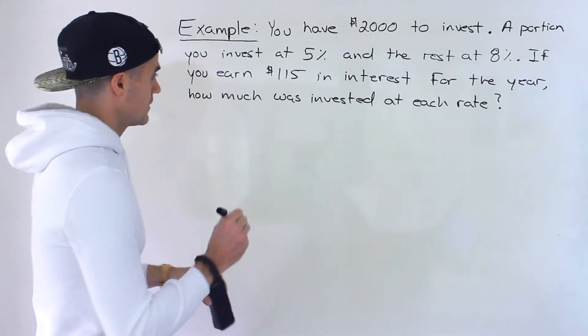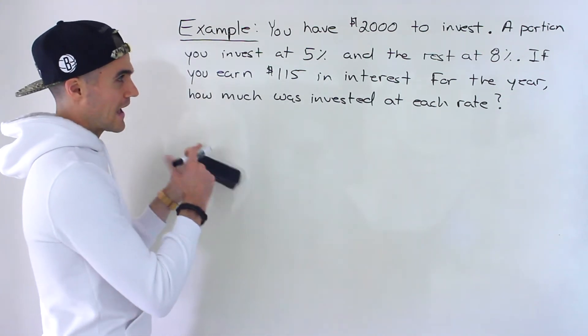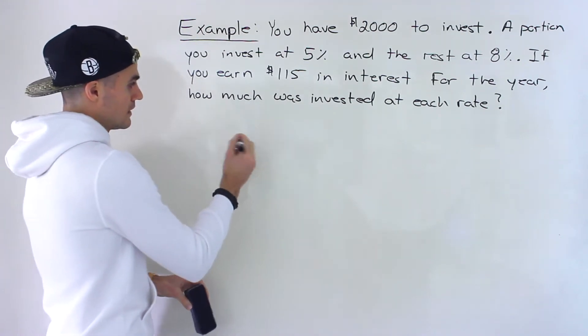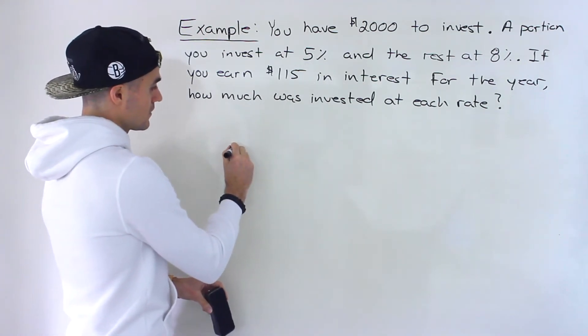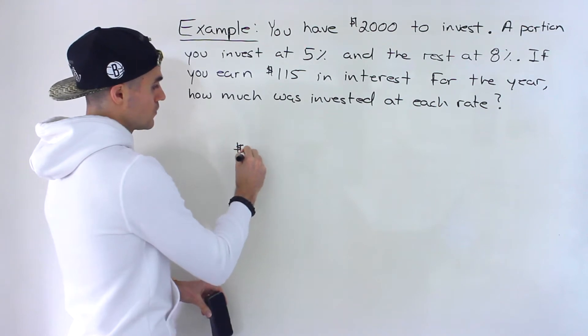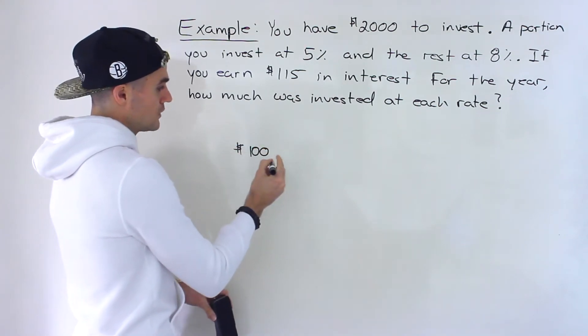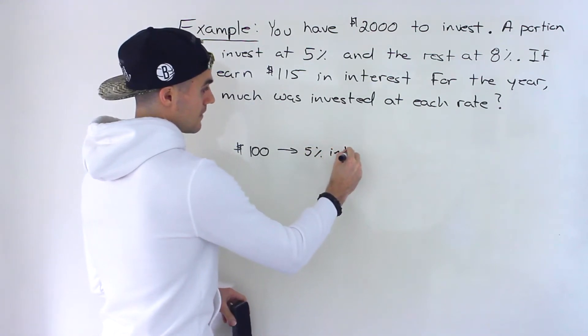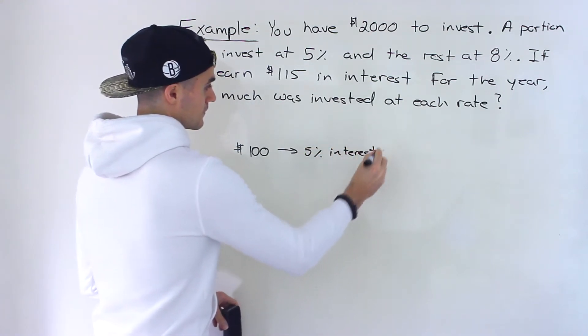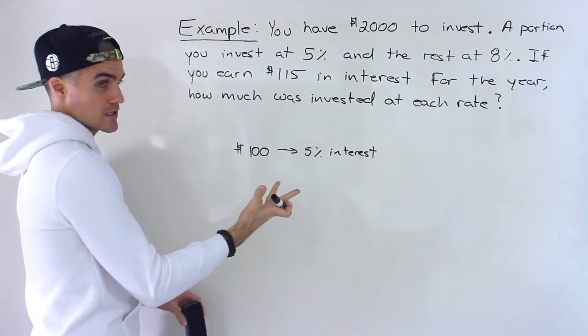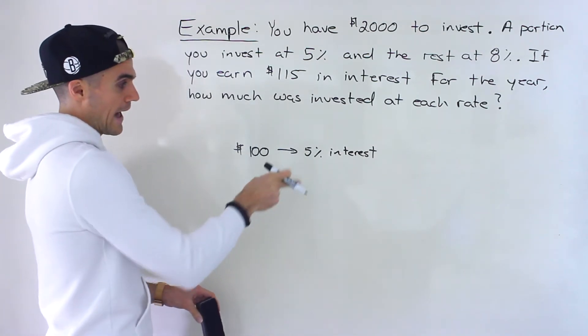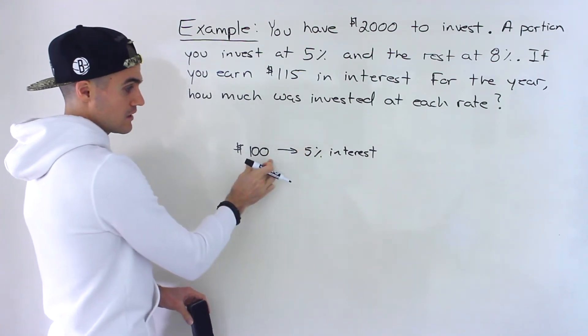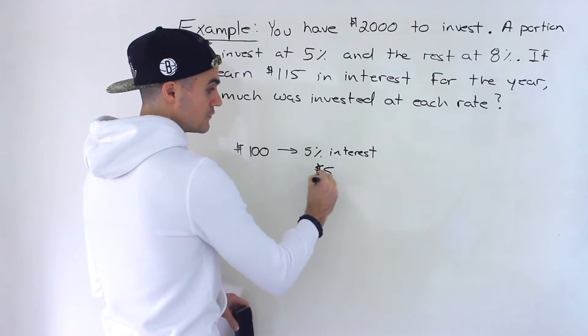Now before getting into this, I just want to quickly review some of the algebra that's going to be used, the formats that are going to be used with this kind of question. So let's say, let's take a different scenario and let's say that you invest $100 and you earn 5% interest on that. How much interest are you going to earn in the first year? Well, it's going to be 5% of this 100, so it's going to be $5.